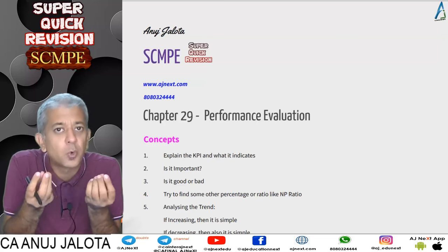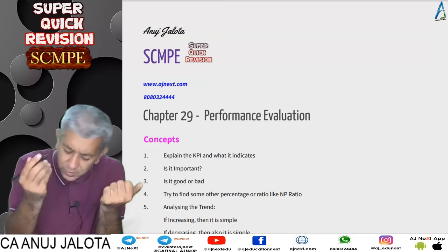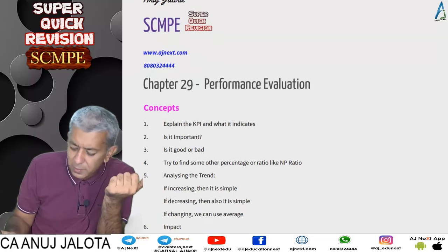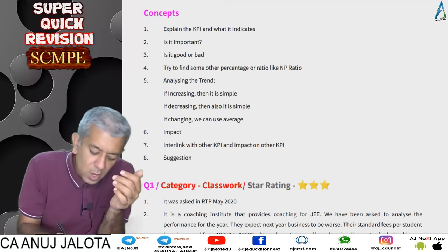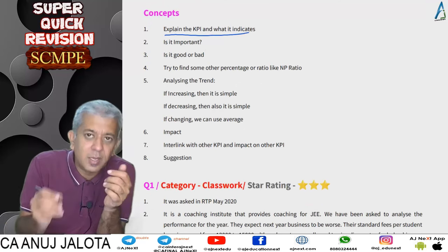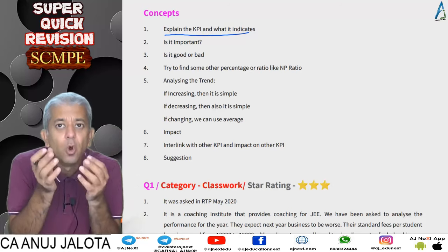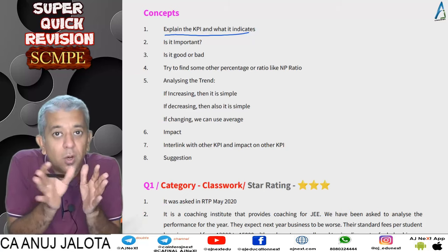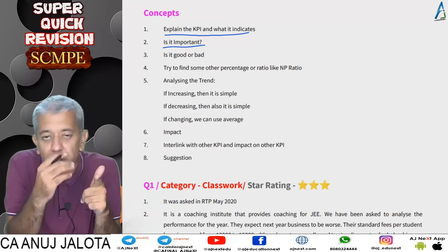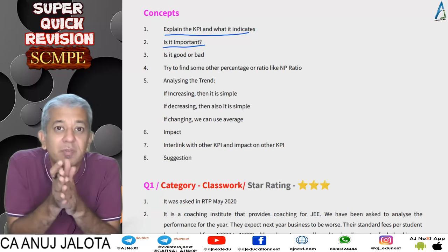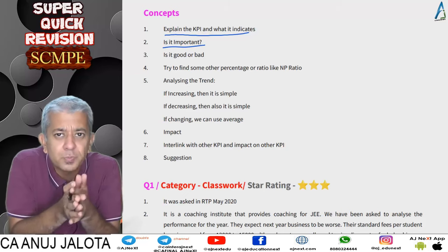Based on various questions, I've tried to summarize a few key things. Whenever you are given a lot of data — for example, net profit ratio or working capital turnover ratio — first understand what each indicator means. Usually whatever data the question gives you is important, but sometimes they might give you data that is less significant, and you can note that it matters but not too much.